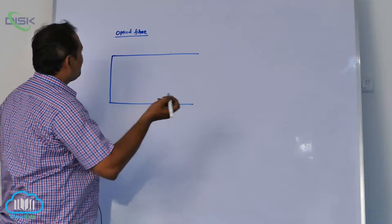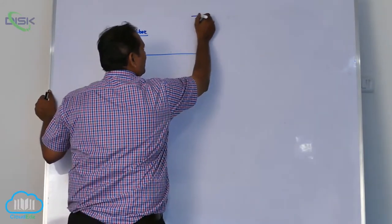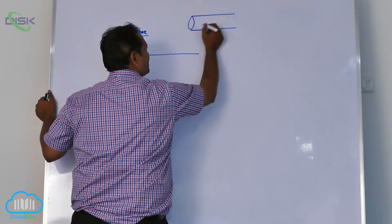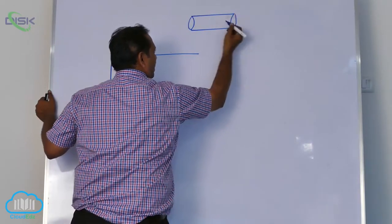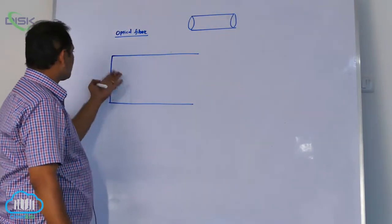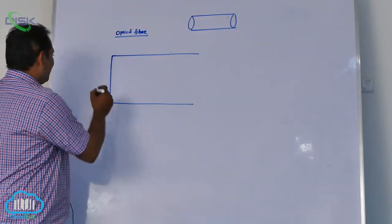Actually, it's a cylindrical pipe. For you to understand clearly, I will cut this optical fiber cross-section wise. One of the cross-sections is like this.